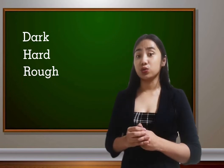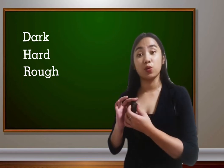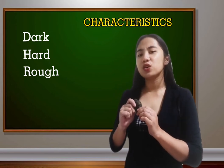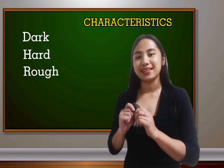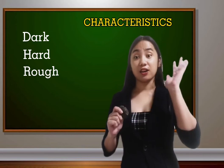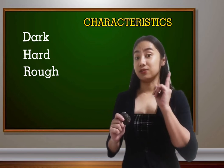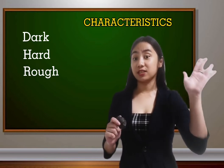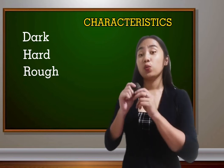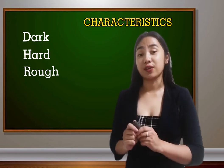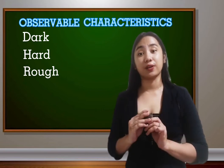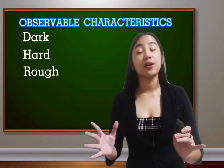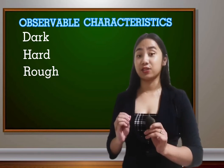Now the words you use to describe this rock are called characteristics. Now since we used our senses — our sense of sight, our sense of smell, our sense of taste, our sense of touch, and our sense of hearing — we call those characteristics observable characteristics. What do we call them? Observable characteristics.